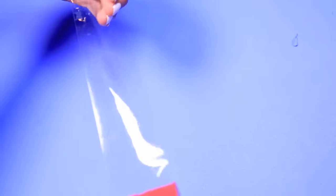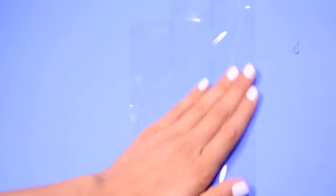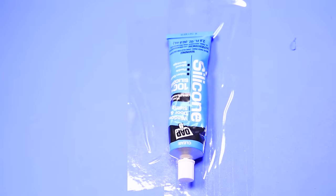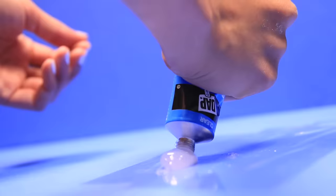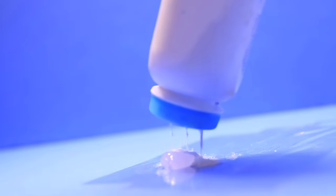For the eraser rings, first tape down a surface so that it doesn't get messy. Then take some silicone, which is surprisingly easier to find than you'd think, like I just got this from Target. And some baby powder. Squeeze some silicone onto the tape and then pour baby powder all over it.